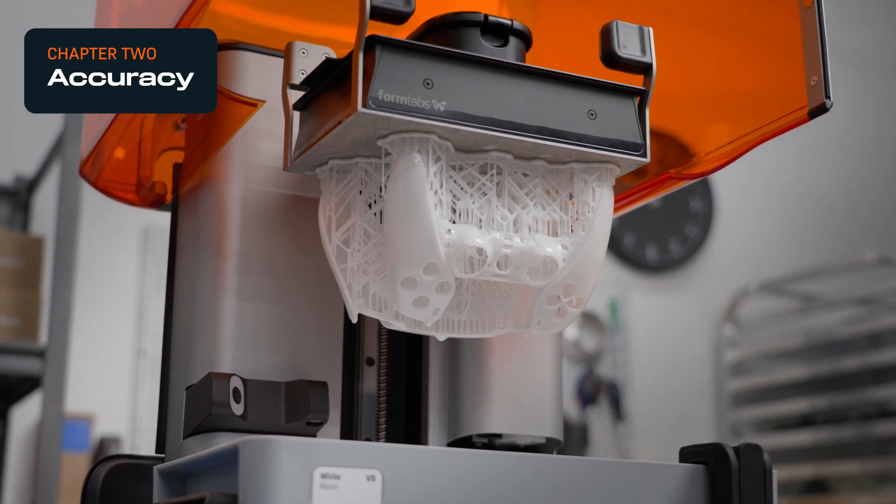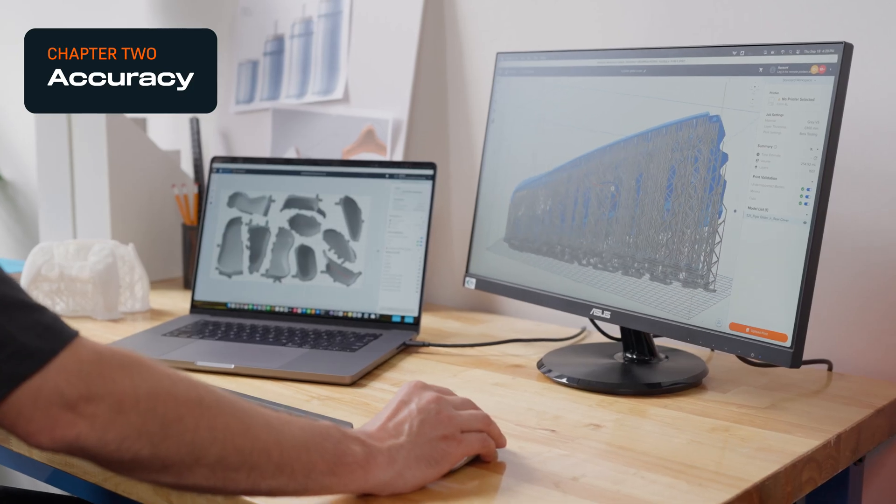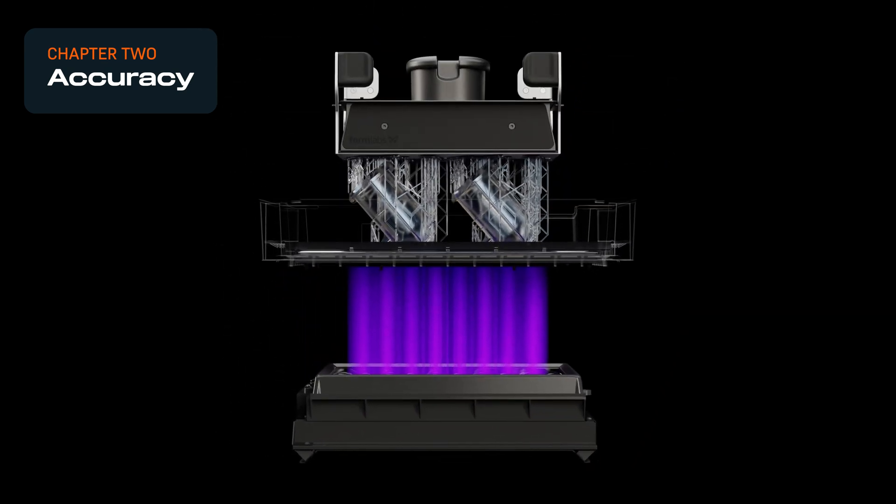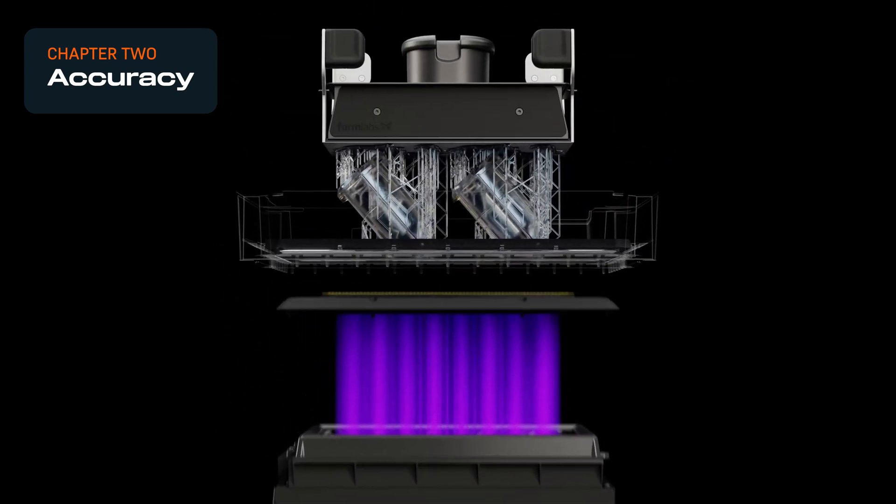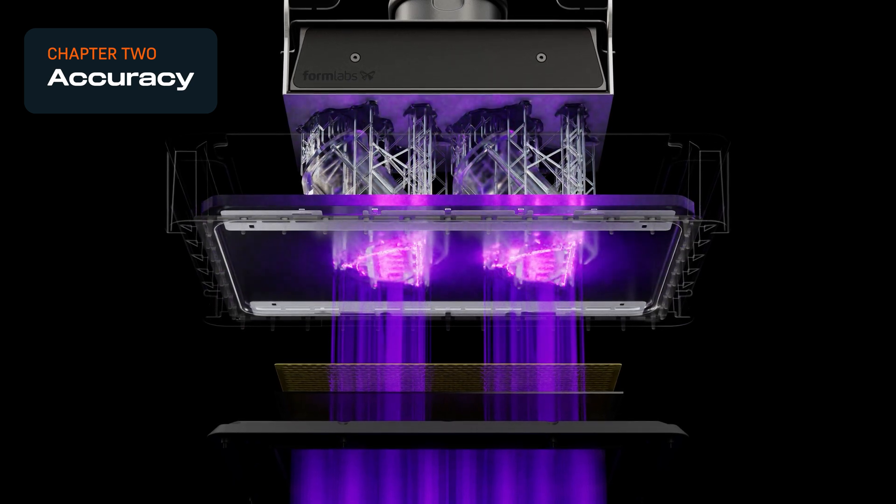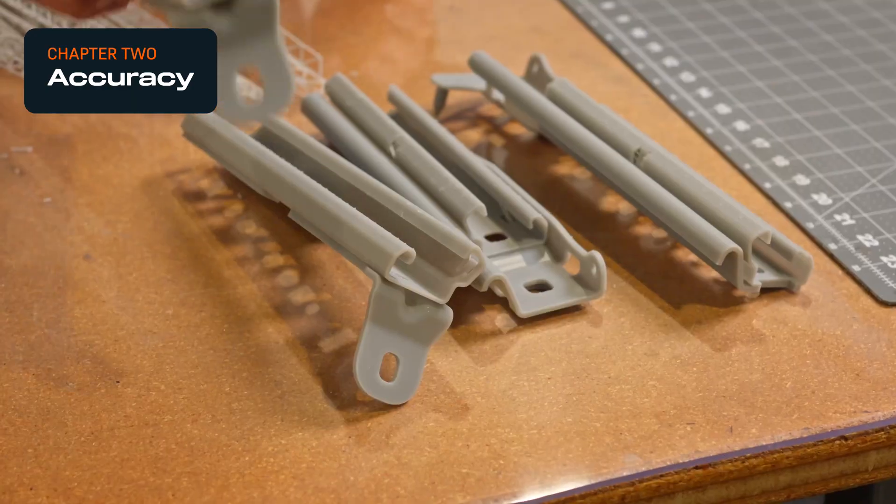SLA 3D printers' accuracy depends primarily on the optical performance of the printer, meaning the light source and light processing unit must supply the correct amount of light. Accuracy is also affected by material choice and the forces that a part experiences during printing.